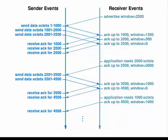That is, octets 1001 to 2500. Now the receiver shows that the window size is 0, so the sender must wait for the receiver to empty its buffer. The window must be greater than 0 before the sender can send octets again, and the same process repeats. This is how window sliding works in TCP. Thanks for watching.